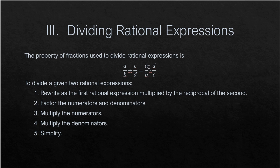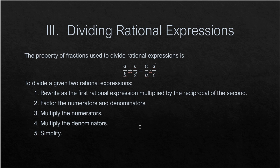We copy the first rational expression A over B, proceed to multiplication, but this time the second rational expression will be in reciprocal form — instead of C over D, it's now D over C. Then we proceed to the rules we employ in the multiplication of rational expressions.